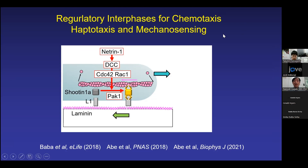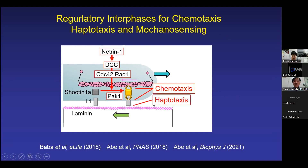This summarizes the regulatory interface for chemotaxis and haptotaxis. The clutch system involving shootilin and L1 promotes chemotaxis and haptotaxis through these clutch interfaces. We recently reported that this interface also promotes mechanosensitive axon outgrowth.